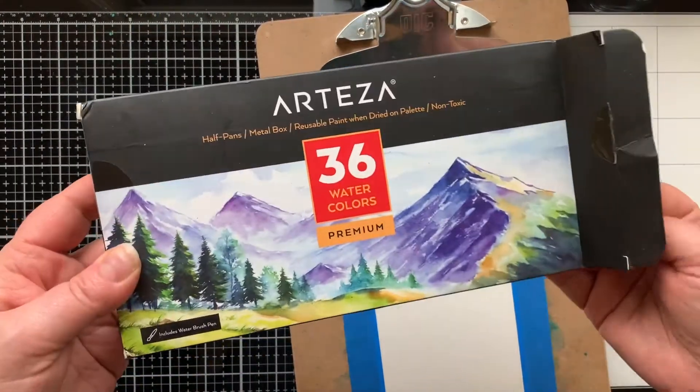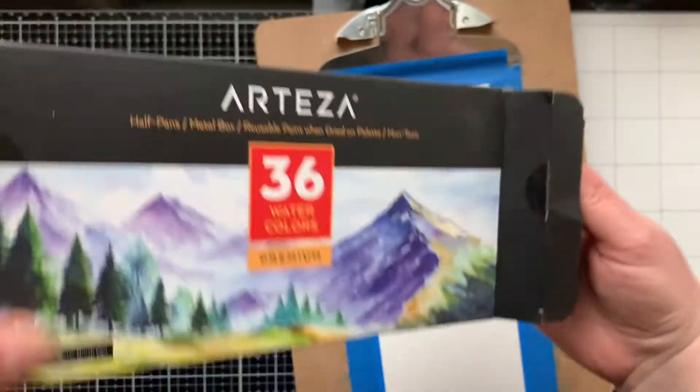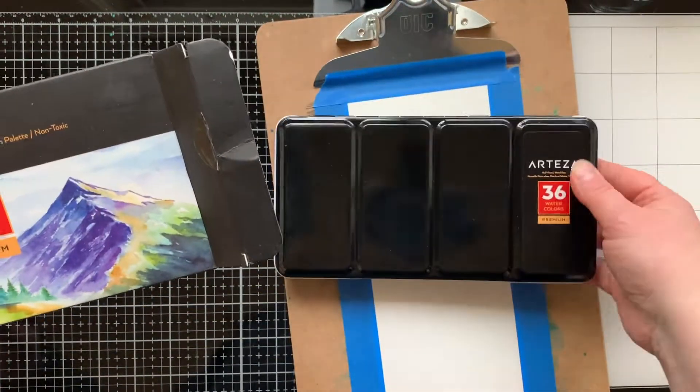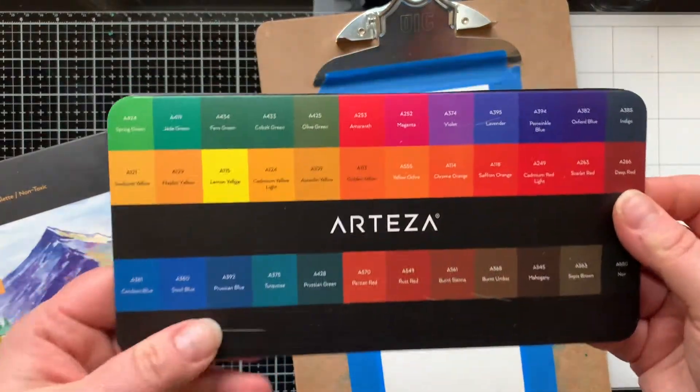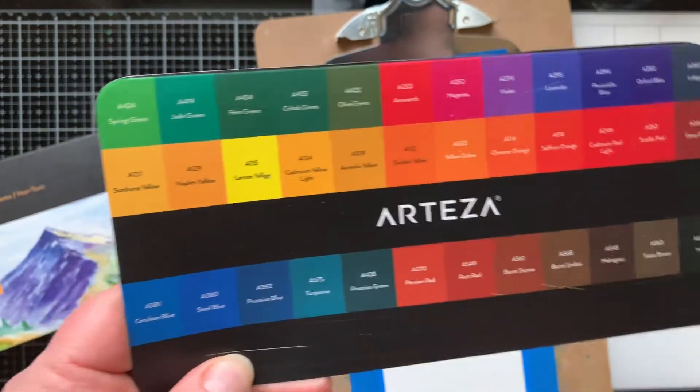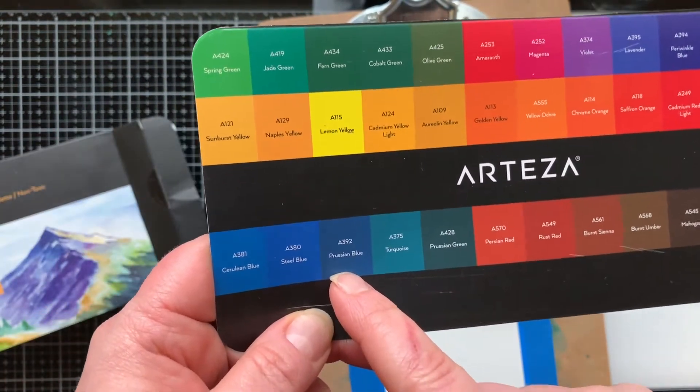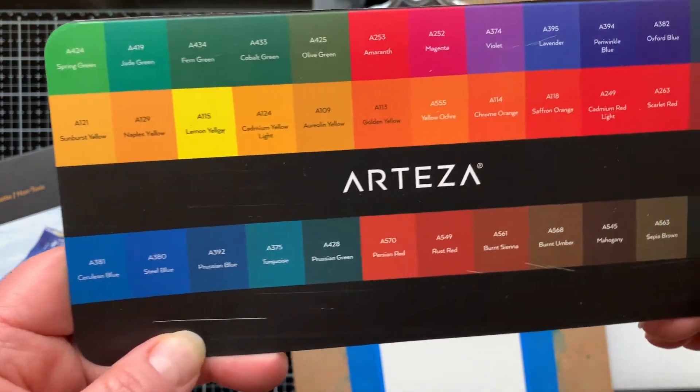Starting my card today by watercoloring a background onto Canson watercolor paper and using the Arteza 36 pan set of watercolors. Here's the swatch card that comes with it. I'll be using indigo, Prussian blue, and steel blue to create a nighttime sky.